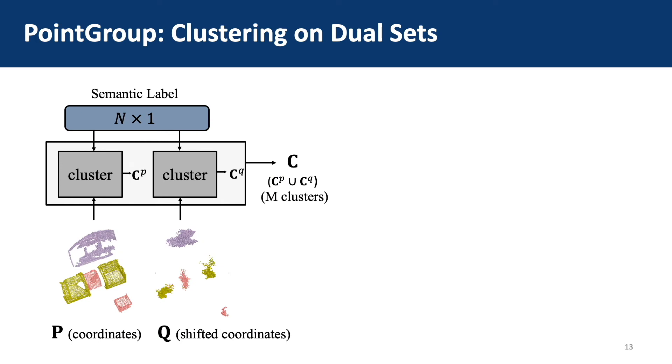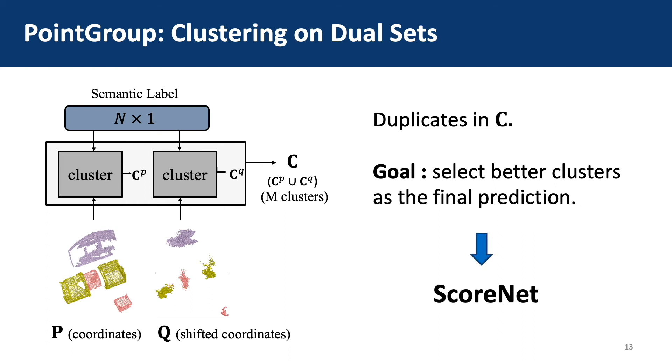Thus, we employ dual point coordinate sets in clustering to combine their strengths. But there are duplicates in the union of the two cluster sets, and to select better clusters as the final instance prediction, we propose the ScoreNet.